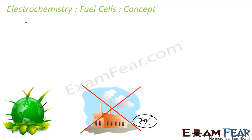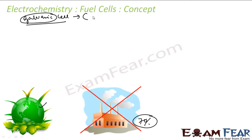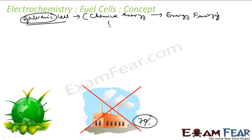Fuel cells are nothing but galvanic cells. Don't think galvanic cell is something which was created by Galvani — it is just in his honor we gave this name. A galvanic cell is any cell that converts chemical energy to electrical energy directly. So in this case, chemical energy of hydrogen, methane, etc. is used, and this kind of cell is called a fuel cell.